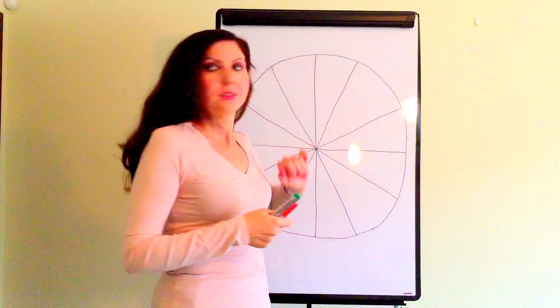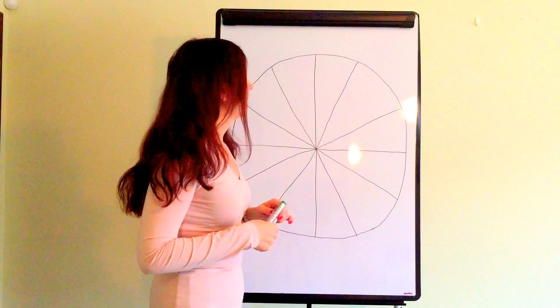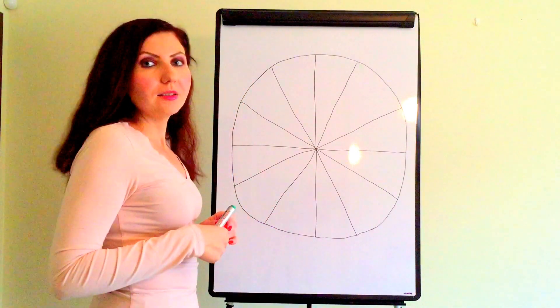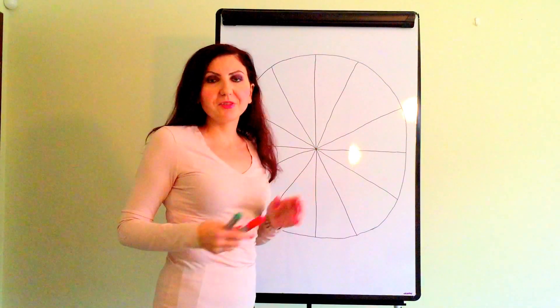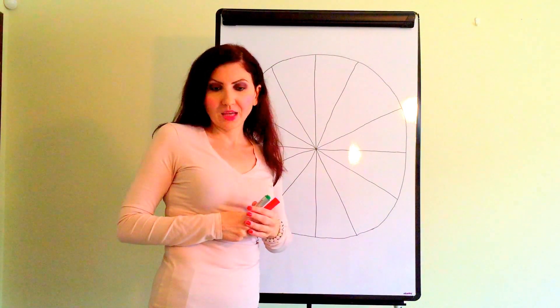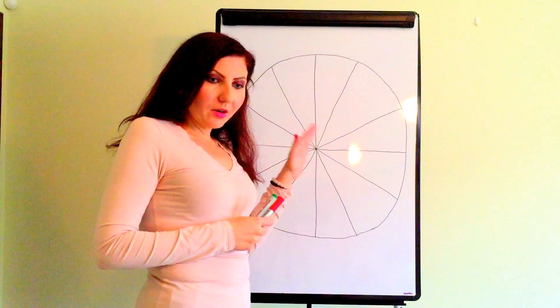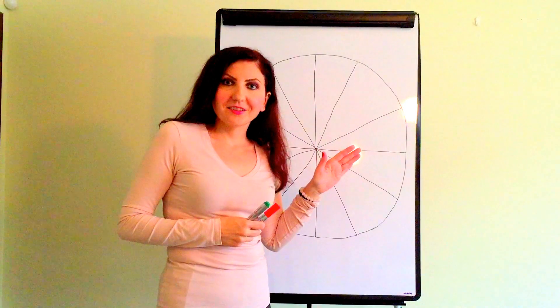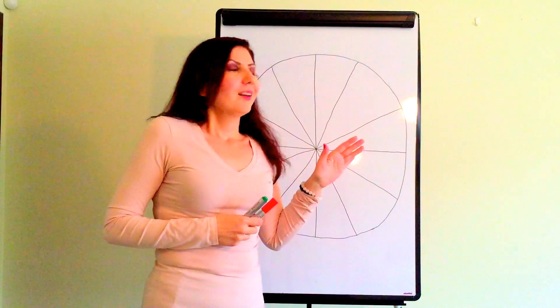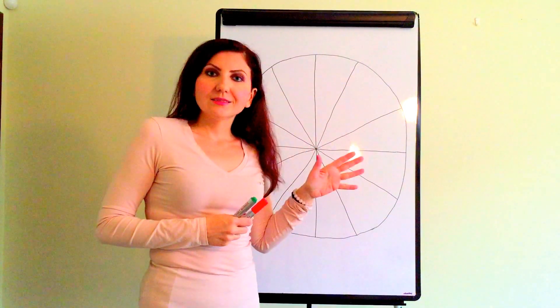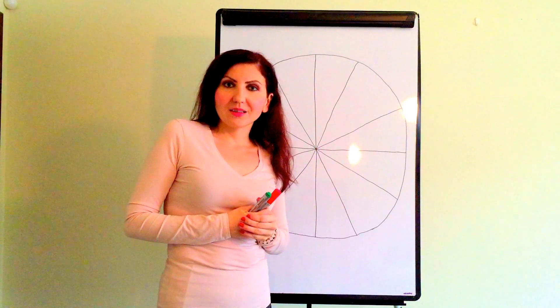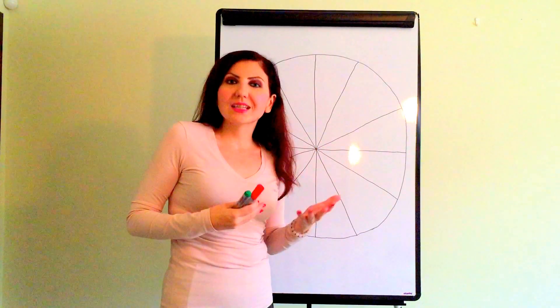So I am done with planet Saturn and now I would like to continue with the planet of luck and abundance, which is called Jupiter. Really, wherever Jupiter is placed in your chart, then there you can expect a lot of support, a lot of abundance. It's luck, there is luck, there is pleasure.